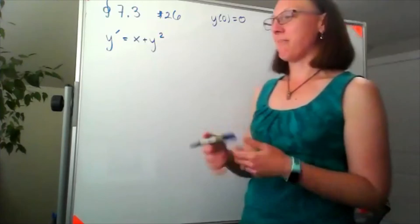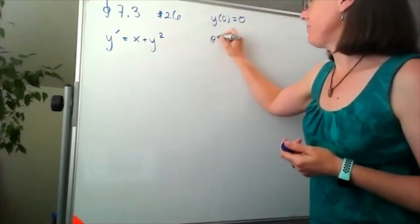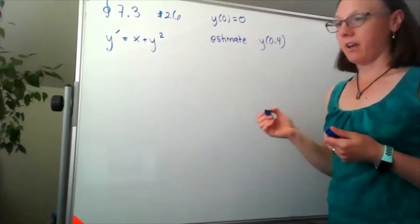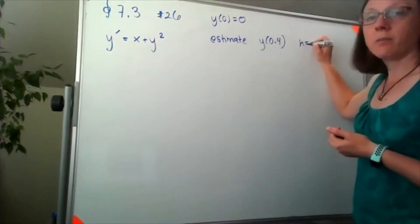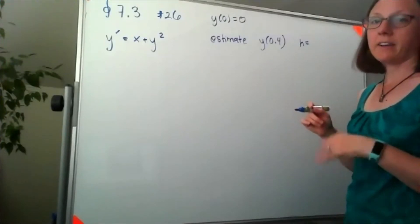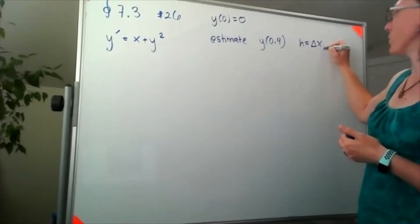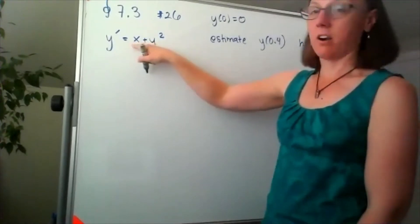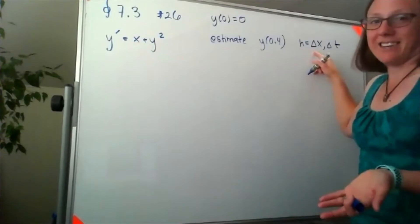Luckily in problem 26 we have been asked to estimate y of 0.4, and for part a we're going to do that with a step size of 0.2. In this case, because our other variable here is x, I'm going to go ahead and call our step size delta x.